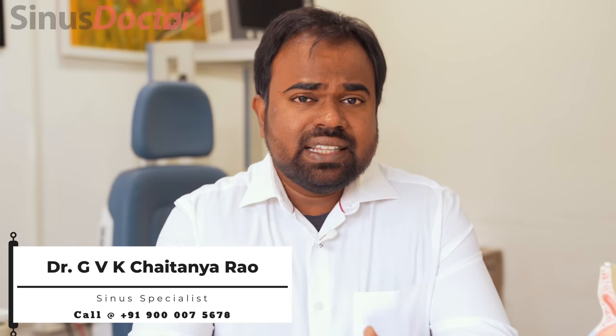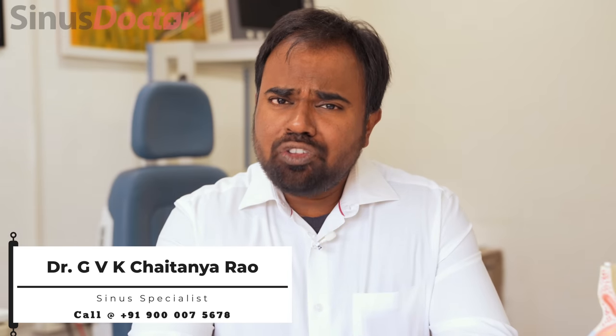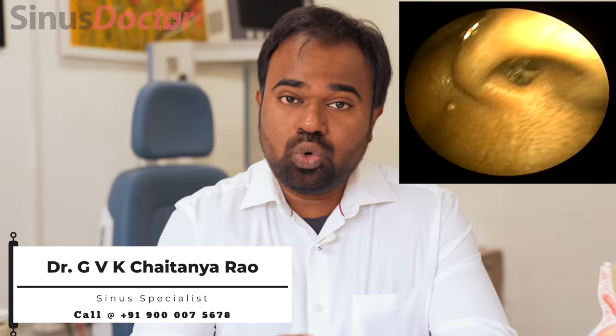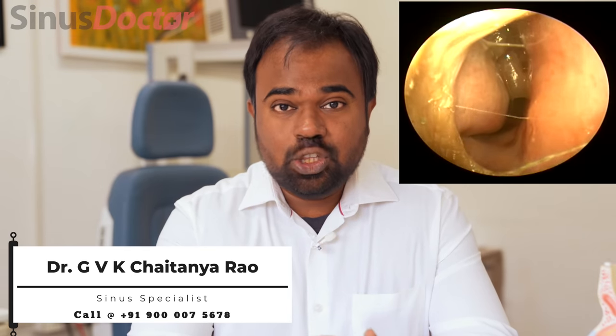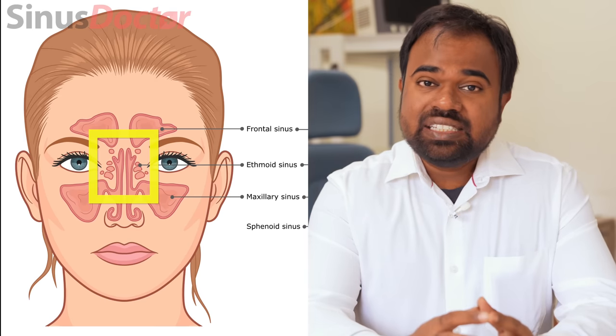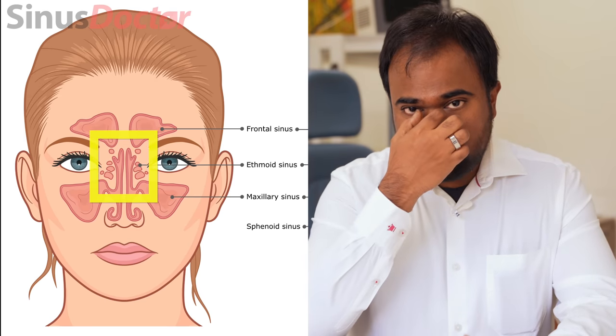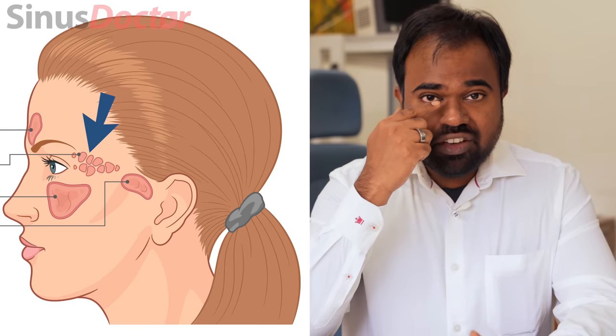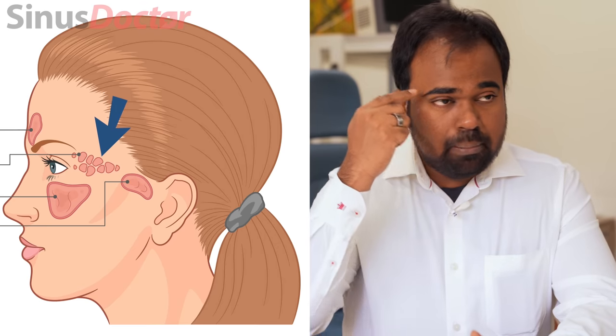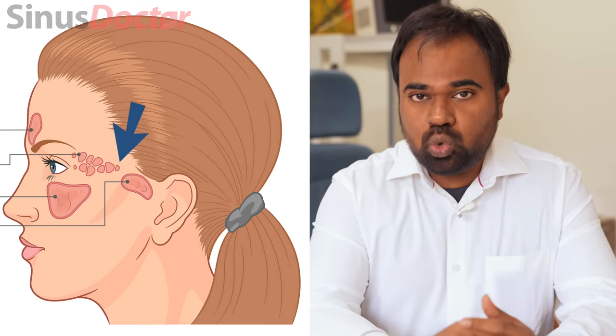So what is nasal polyposis? Nasal polyps are soft, painless, non-cancerous growths which arise from the ethmoid sinuses. The ethmoid sinuses are present between our eyes and extend all the way from the front of the nose to the back of the nose, just above our throat. As these polyps start growing in size, they occupy the nasal passageway and obstruct the sinus drainage pathways, and this is what produces the symptoms in patients having nasal polyposis.